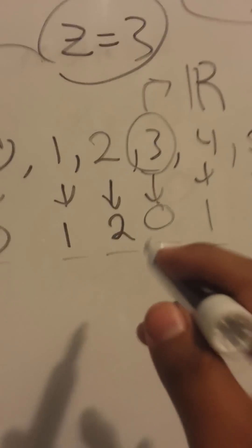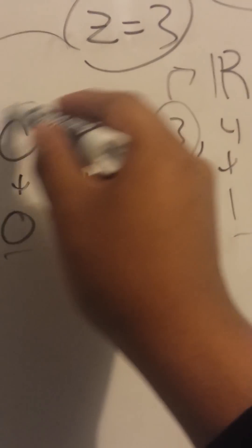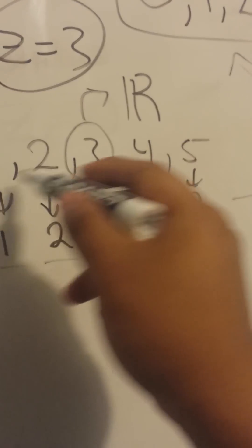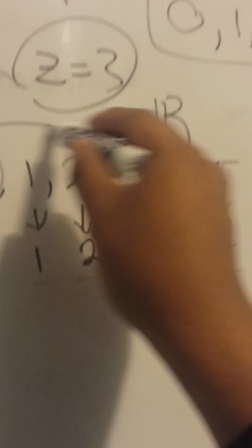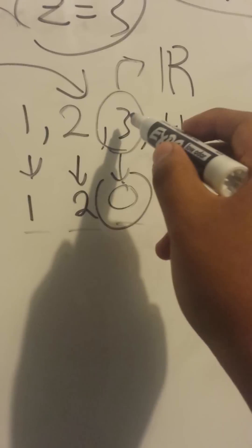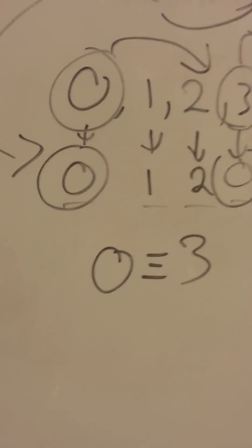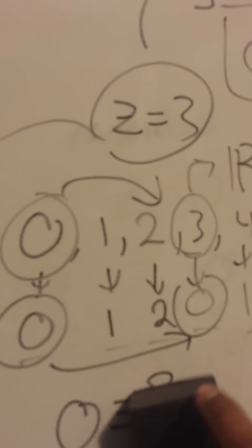The cool thing about modulus is that in mod 3 we can say that 0 and 3 are the same thing — because both 0 and 3 equal 0 in mod 3. So we say 0 is congruent to 3. Don't mix up congruent with equal, but in a sense they're equivalent because they share the same mod value.